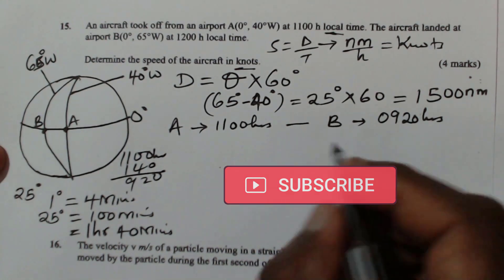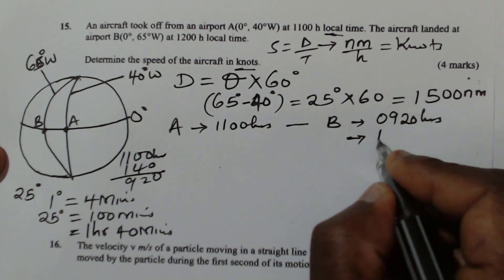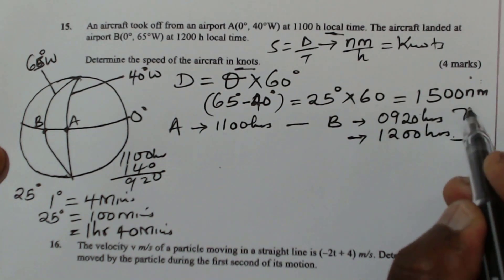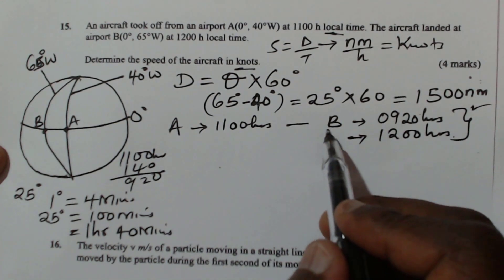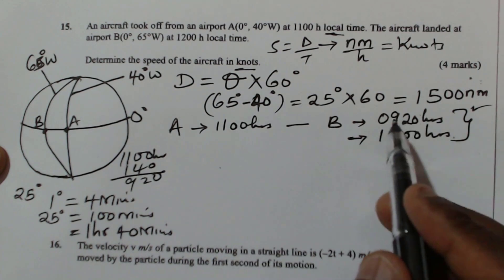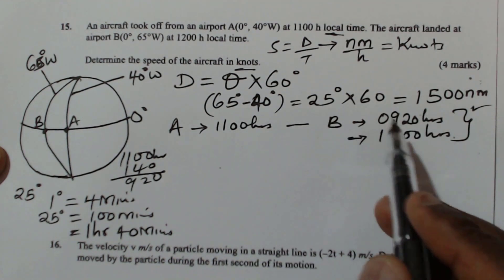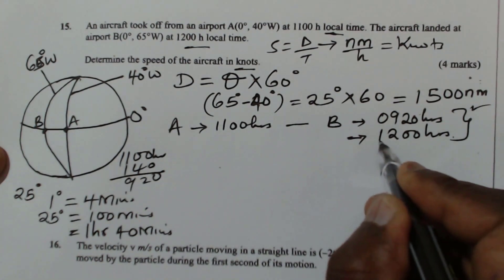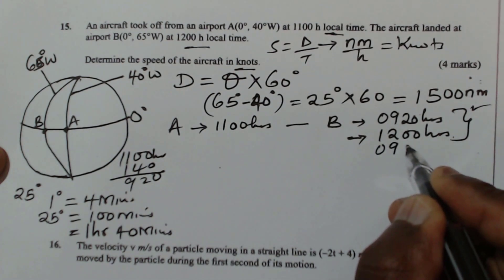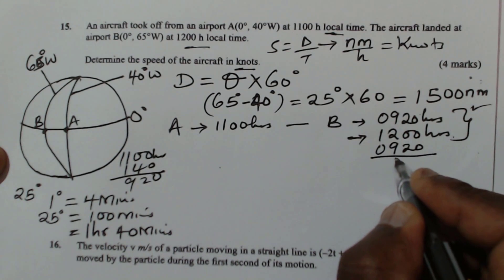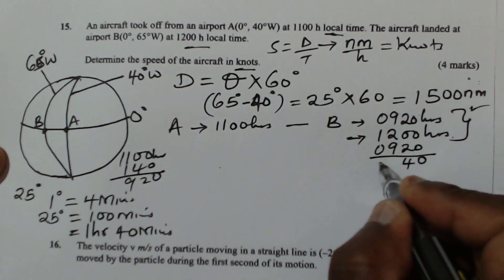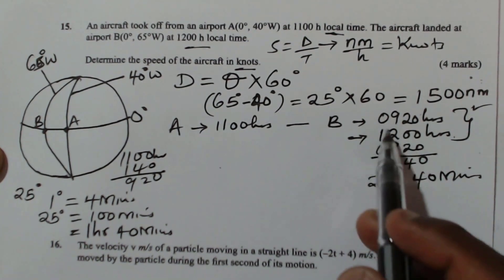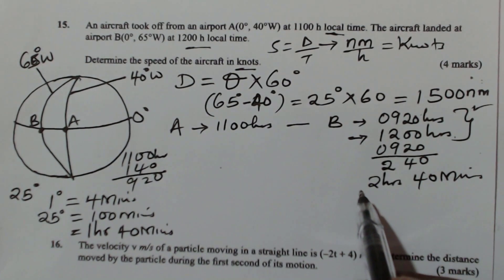This aircraft arrived at B at 12:00 hours local time at B. So we use 09:20 hours — that is the local time at B when the aircraft left A. The aircraft arrived at B when the local time at B was 12:00 hours. To get the time taken, we calculate 12:00 hours minus 09:20 hours, being careful to account for the time difference between the two longitudes.